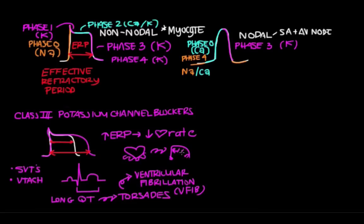Anyone who has a long QT interval — whether from medications they're taking or from a genetic mutation — should stay away from potassium channel blockers, because we don't want to throw them into V-fib.